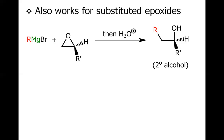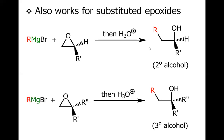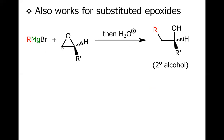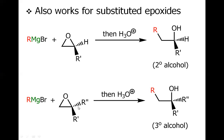This also works for substituted epoxides. When we have an alkylated epoxide, the Grignard reagent will again open the epoxide ring to give an alcohol. It is important to note that the alkyl group attacks at the least hindered site. So the R group attacks that carbon, the C-O bond is broken, and after workup the OH appears on that carbon, generating a secondary alcohol. If two alkyl groups are attached to one carbon of the epoxide, the Grignard reagent or organolithium will attack the least hindered site and the OH will appear on the carbon bearing R and R', generating a tertiary alcohol.